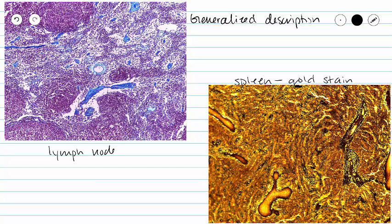The unifying characteristic that we see in reticular tissue is a branching network of fibers. In our gold stain that branching network is going to be brown, and in our lymph node that branching network is going to be light blue. Surrounding all of those fibers we have cells that we call parenchymal cells, and they crowd around and attach to those reticular fibers.